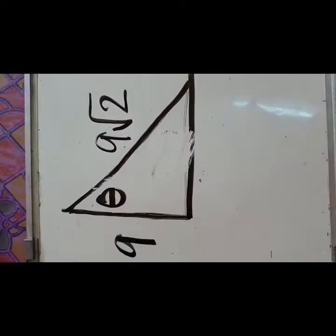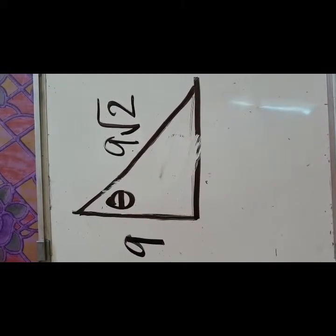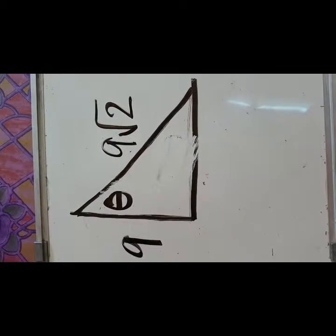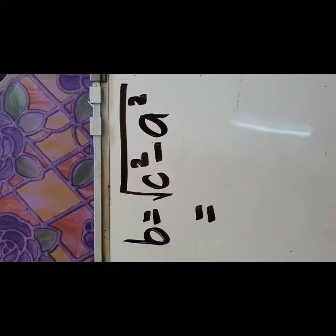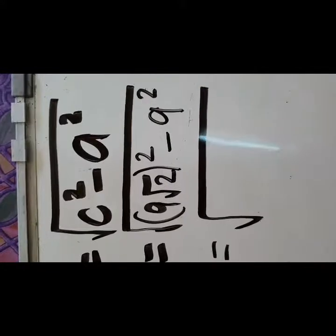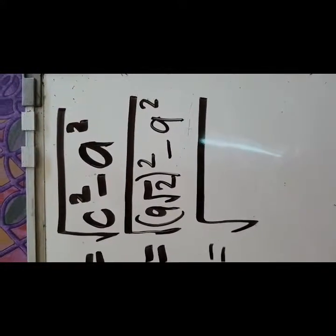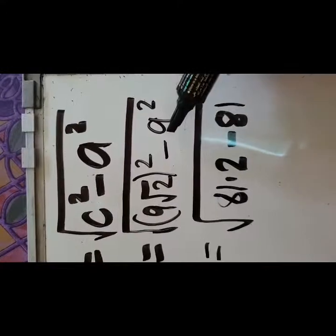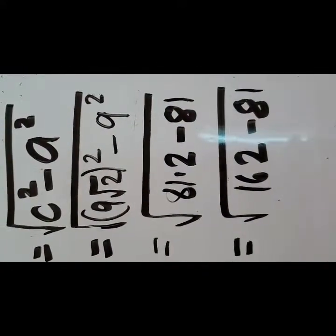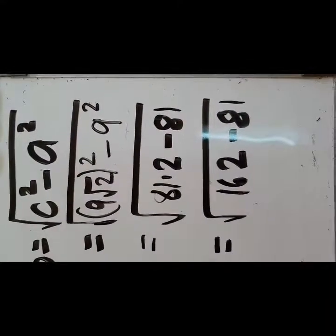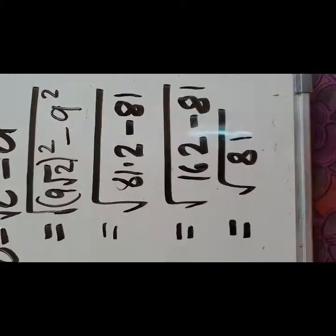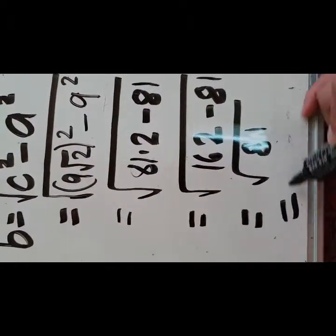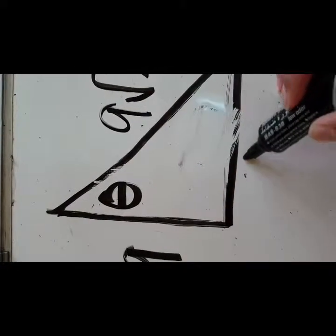For the last example, the hypotenuse is 9 square root of 2 and the adjacent side is 9. We are looking for the opposite side. Following the Pythagorean theorem, b equals the square root of c squared minus a squared. So we have the square root of (9 square root of 2) squared minus 9 squared. (9 square root of 2) squared equals 81 times 2, and 9 squared equals 81. 81 times 2 is 162, so we have the square root of 162 minus 81, which is the square root of 81, equal to 9. Therefore, the opposite side is equal to 9.